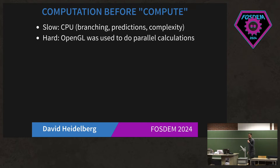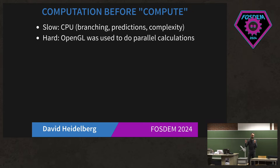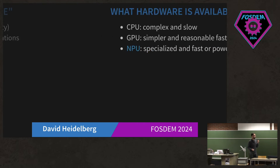How did it look before compute as we know it now — CUDA, ROC-M, OpenCL? You could do computation on CPU, but CPU has high overhead because it's meant to run classical computer programs and not highly parallelized software. Or you could use OpenGL and squash computations into OpenGL workloads, but that was a big hack and workaround that some scientists used, though not widely.